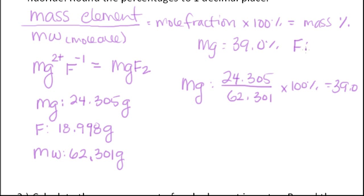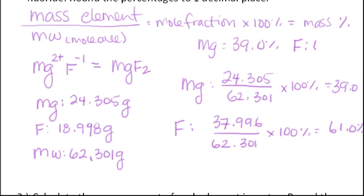So fluorine, since this has to be 100 percent overall, should come up to 61.0. Let's check that. Fluorine, you have two of them, 18.998. That would be 37.996 over 62.301. This is looking about right so far. And when you plug that into your calculator, you'll find that yes it is 61.0 percent. Those are your mass percents for magnesium fluoride.